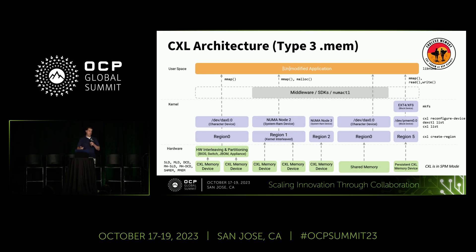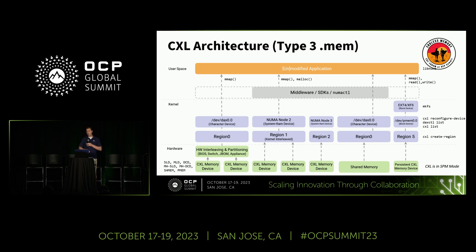On top of that, the application can just utilize this stuff. We're focusing on unmodified applications — it could be a database, machine learning, or AI-based. On the very far right-hand side is persistent CXL, kind of like it was with Optane and persistent memory. Those devices are coming. Samsung has announced their memory semantic SSDs, using flash as the persistent media fronted with a DRAM cache. The same drivers we use for Optane will continue to be used for these new devices, exposing memory as a file system for applications using memory-mapped files or standard file semantics.